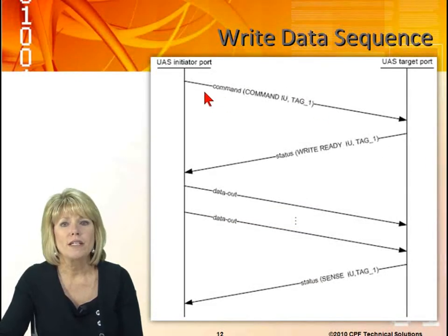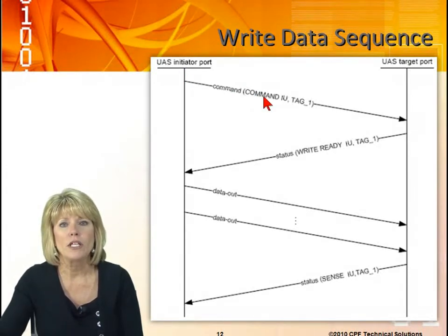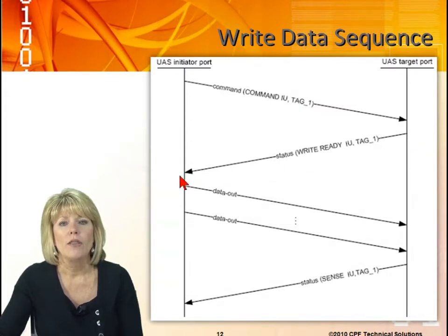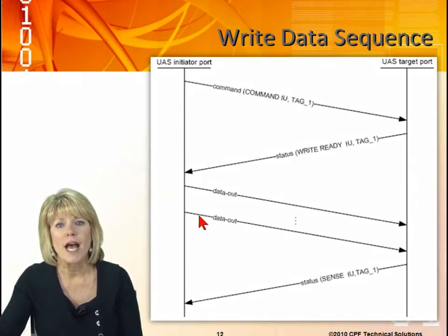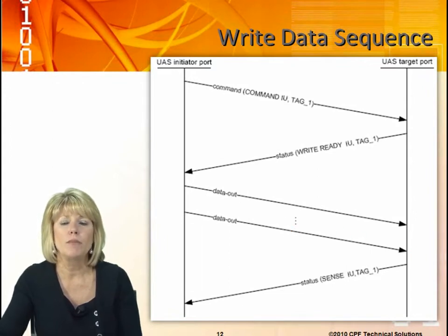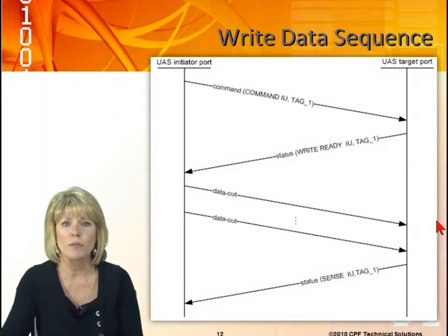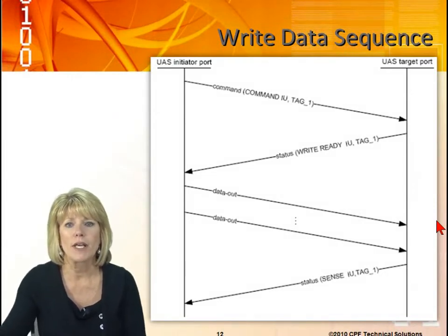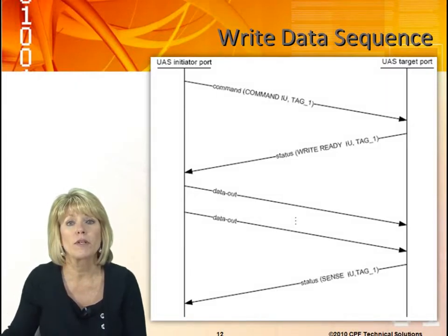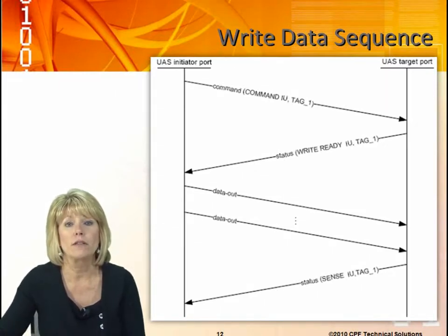On a write with data sequence, we have the command coming from the initiator port with tag one. The status says, okay, I'm ready for the write. Then the data comes out — however many bytes of data. Keep in mind, this is a streaming protocol as well, so there can be multiple data packets coming out. And then finally, there will be a status coming back to confirm the status of that write sequence.